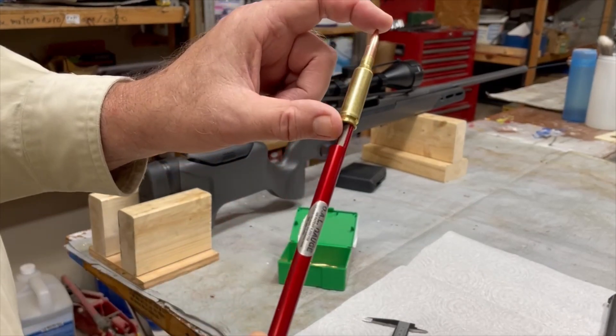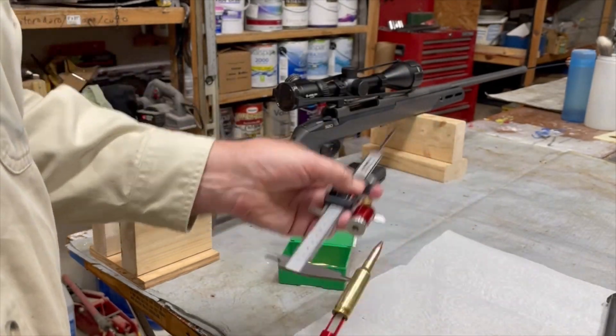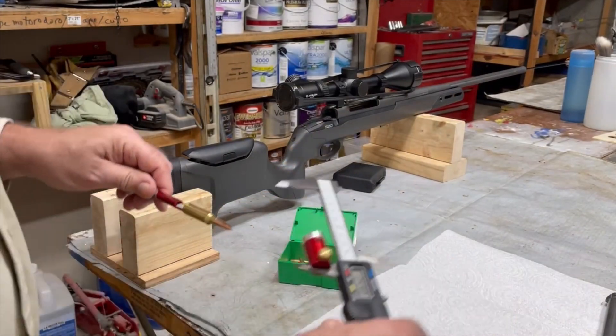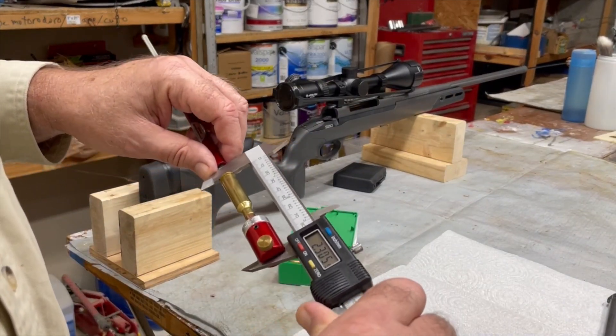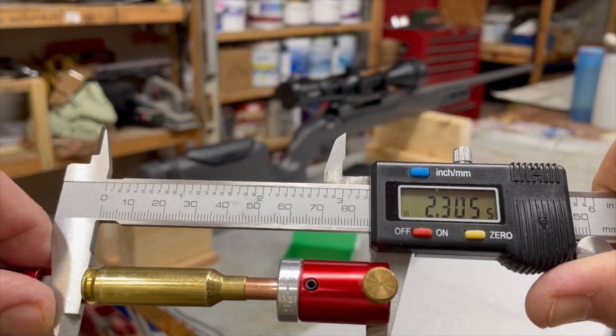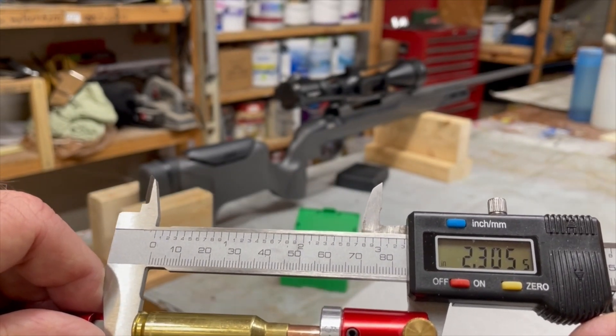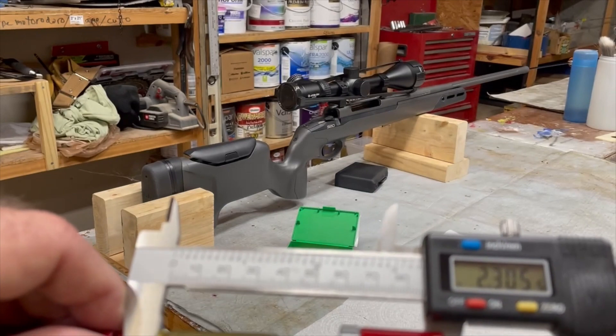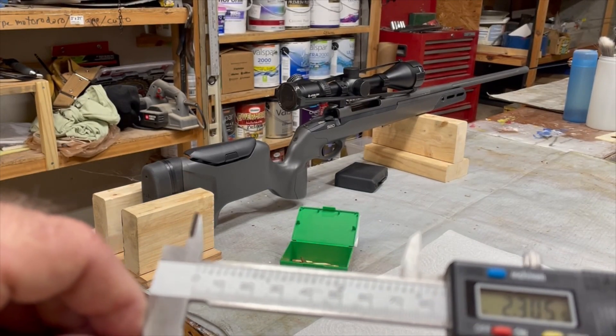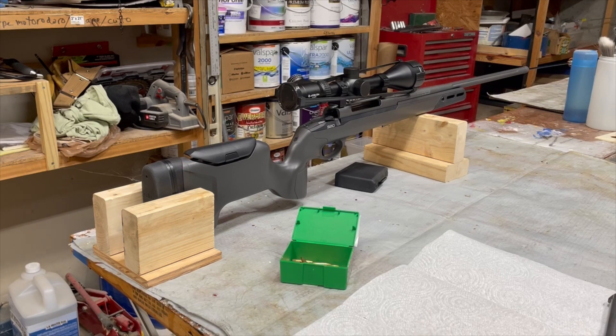This is the total length of the cartridge base to where the ogive meets the rifling. We place that in our caliper, and it gives us a measurement of 2.305. I'm going to back off just a little bit off of that, and I'm going to go with 2.30 because there's a little bit of variation from one bullet to the next. To be on the safe side, we're going to assume that 2.30 is where the ogive meets the rifling.